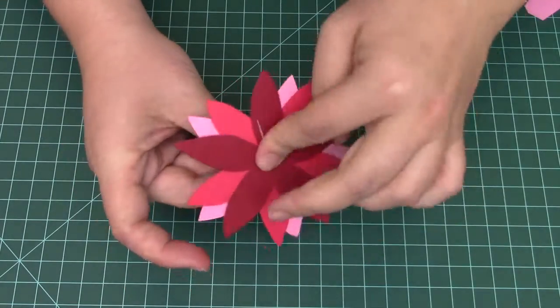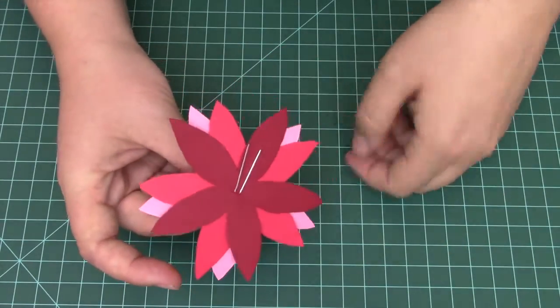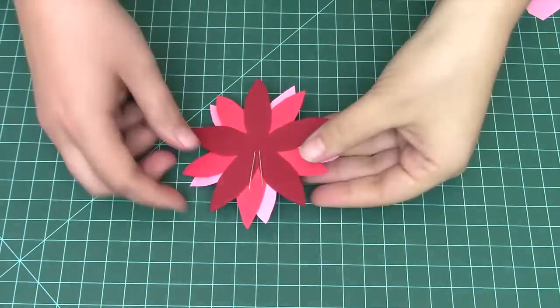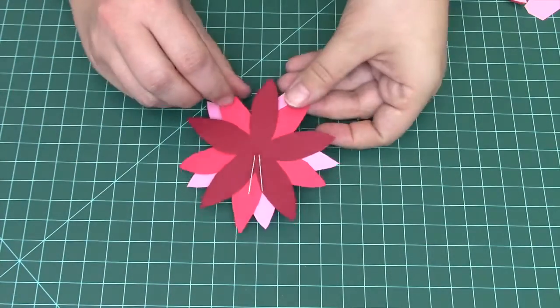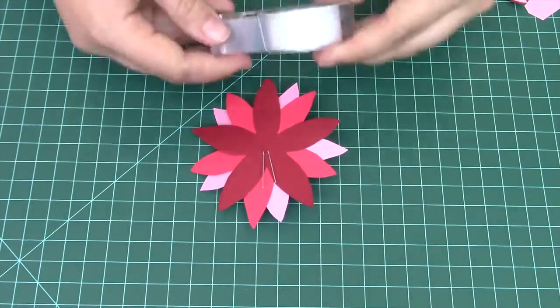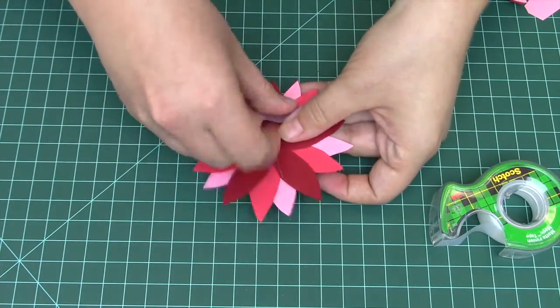Next bend the LED legs over. And finally, arrange the petals how you like, and use a piece of tape or a glue stick to hold the petals in place.